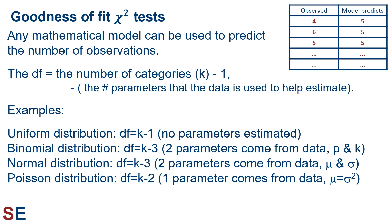For goodness-of-fit tests, any mathematical model can be used to predict the number of observations. The degrees of freedom will be the number of categories k minus 1, and then subtract the number of parameters that the data is used to help estimate. Predictions can come from the uniform distribution, in which case the degrees of freedom will be the number of categories minus 1 — no parameters are estimated from the data. Predictions can come from the binomial distribution, in which case the degrees of freedom will be the number of categories minus 3, because we need to estimate the probability of success and the number of trials from the data — that's two parameters. Predictions can also come from the normal distribution, in which case the degrees of freedom will also be the number of categories minus 3, because we use our data to estimate the mean and variance. Predictions can also come from the Poisson distribution, in which case the degrees of freedom will be the number of categories minus 2, because although we estimate the mean and variance, for a Poisson process they're the same, so we're only estimating one parameter.